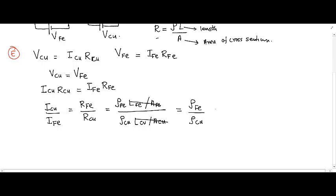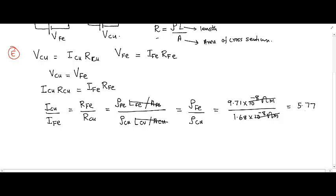Plugging in the numbers given in the question: the resistivity of iron is 9.71 × 10⁻⁸ Ω·m and the resistivity of copper is 1.68 × 10⁻⁸ Ω·m.